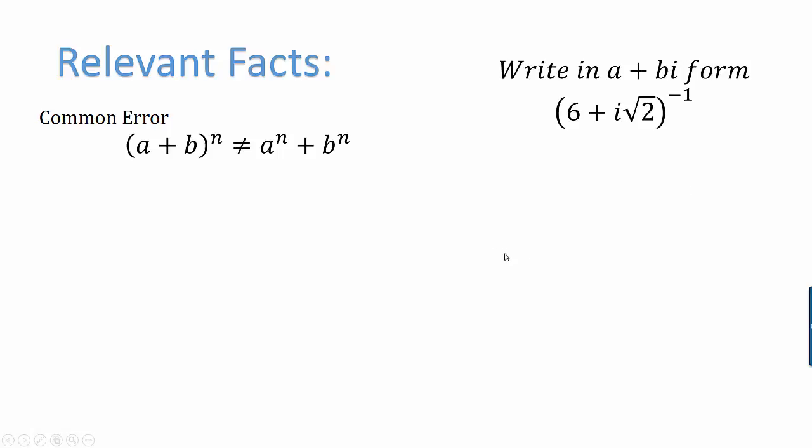We want to keep some facts in mind. First of all, it may be tempting to raise 6 to the negative 1 and i root 2 to the negative 1, but that is not correct. In fact, in general it's not true that a plus b raised to the n power is equal to a to the n plus b to the n. If a and b were multiplied, that would be a different story, but when we have a sum, remember that when we multiply a plus b times itself many times, we get some middle terms. So in general that's just not true.